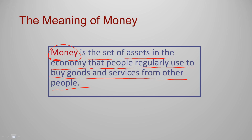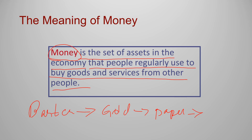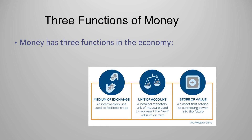We'll discuss how money has been used throughout history — from barter, to gold, then paper money, and now we also have Bitcoin. All of these are considered money. But before we get to that, we need to understand the functions of money, because anything that can be used as money must have these three functions.